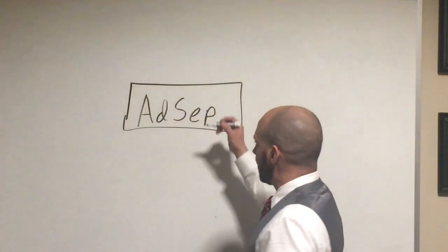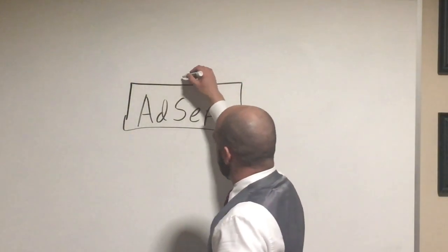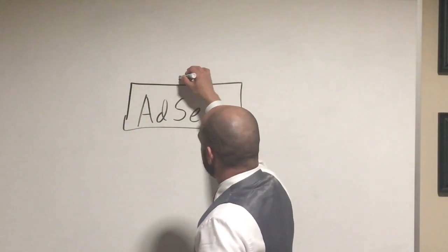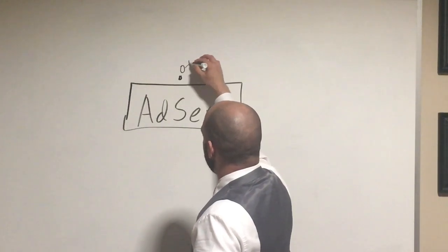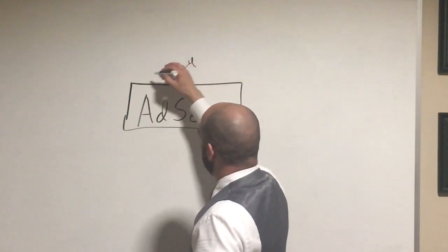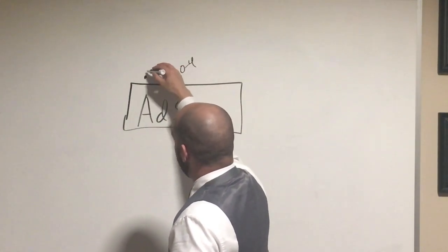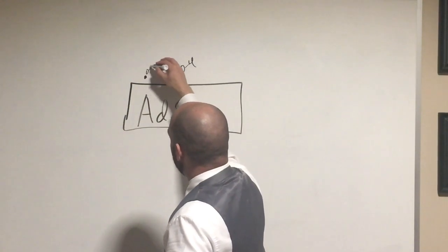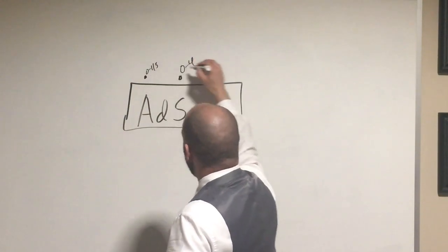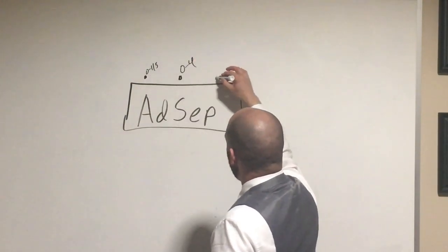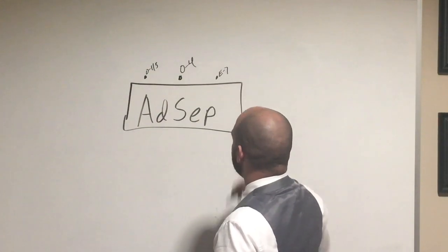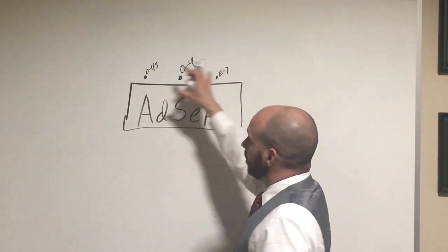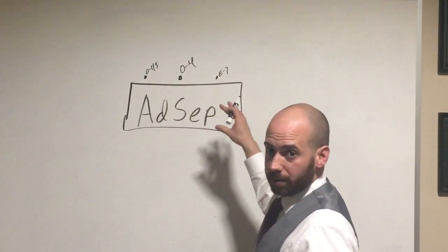At that board you're going to have three individuals. You're going to have a senior member, which is going to be an O-4 or higher. You're going to have another member, which is typically an O-1 to O-3. And then you're going to have another board member that's typically an E-7 or higher. And they're going to form the board.